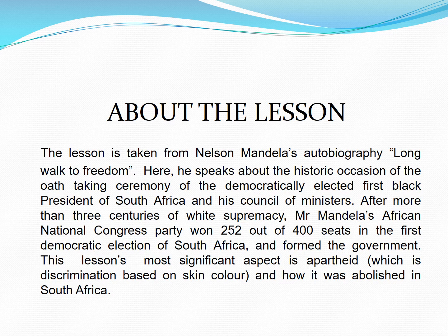After more than three centuries of white supremacy, Mr. Mandela's African National Congress Party won 252 out of 400 seats in the first democratic election of South Africa and formed the government. This lesson's most significant aspect is apartheid, which is discrimination based on skin color and how it was abolished in South Africa.